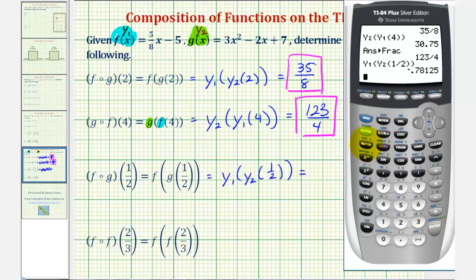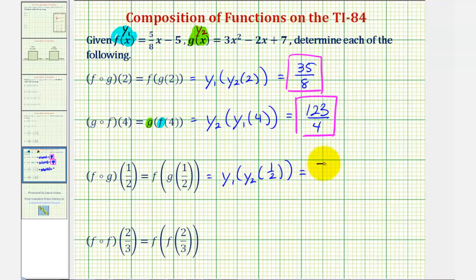To convert to a fraction, we press math, enter, enter. Negative twenty-five over thirty-two would be the composite function value.